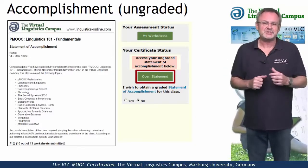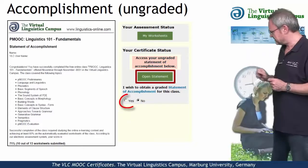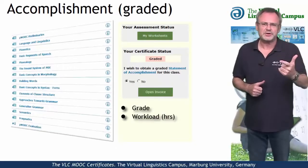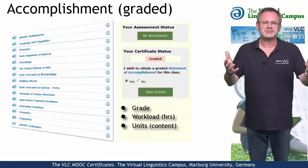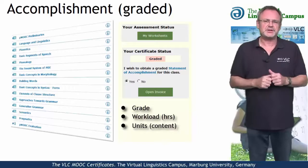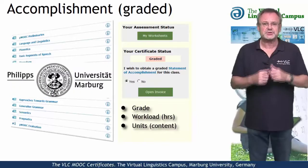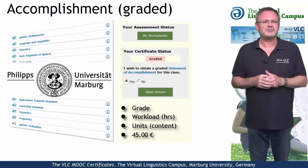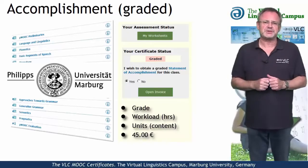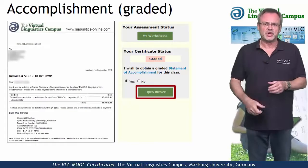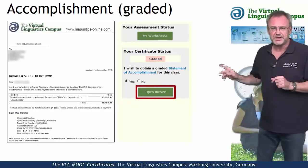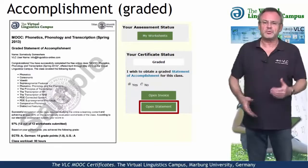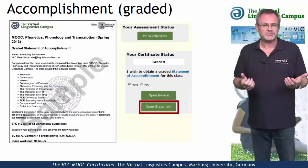If you want to obtain a Graded Statement of Accomplishment, select Yes. This most advanced certification option includes your precise grade, the workload in hours, and a complete list of all the tasks you successfully submitted. This Graded Statement of Accomplishment is issued by Marburg University in conjunction with the Virtual Linguistics Campus and involves a fee of currently 45 euros. Once you have satisfied the conditions and decided to obtain such a certificate, you first open the invoice and transfer the money to Marburg University, after which you can download your personal Graded Statement of Accomplishment via mouse click.